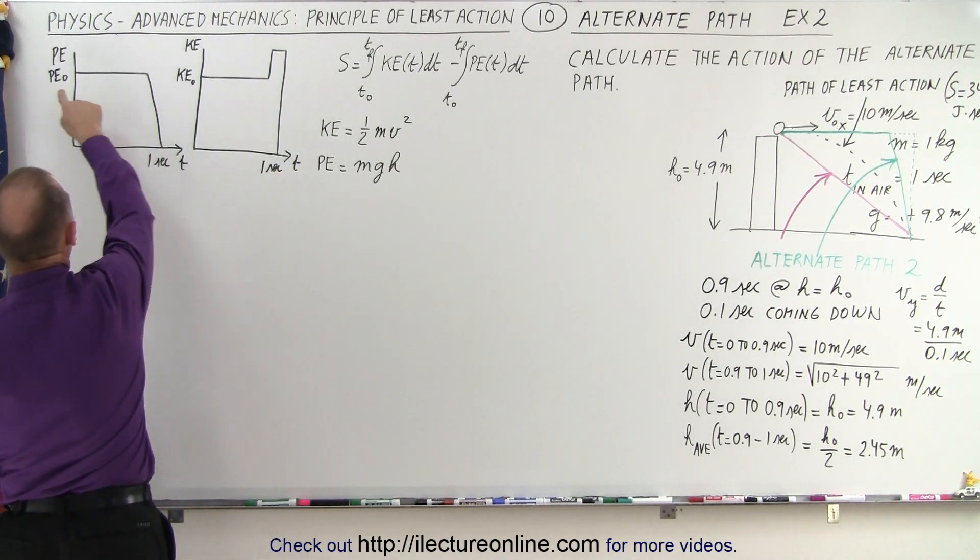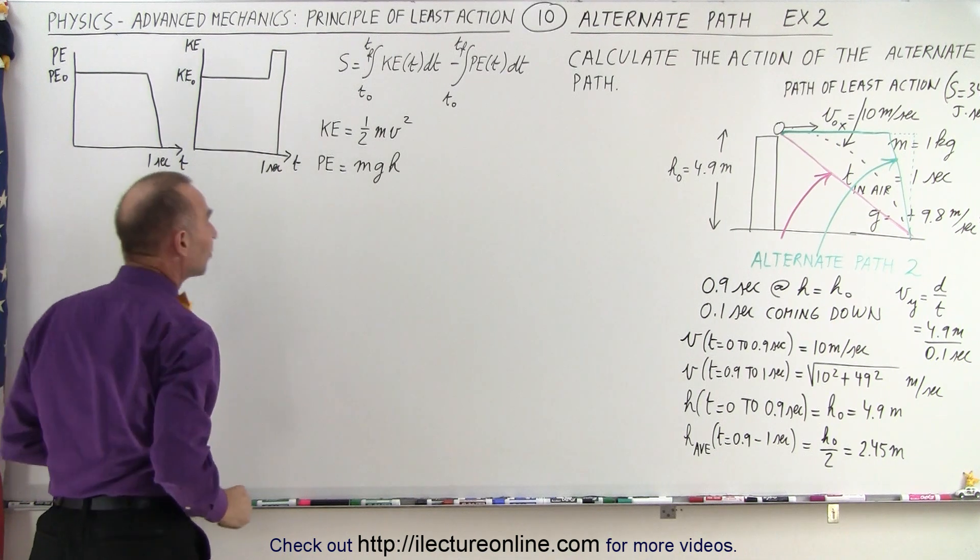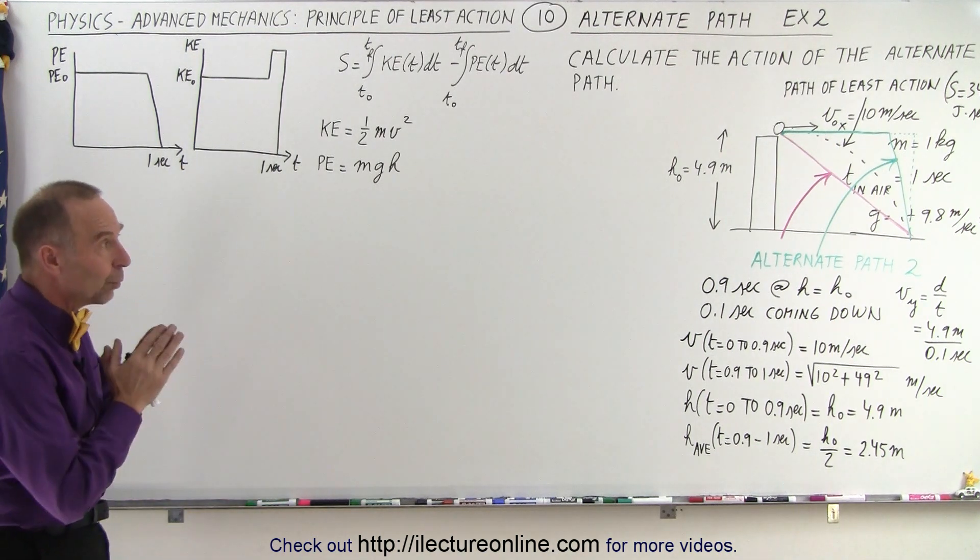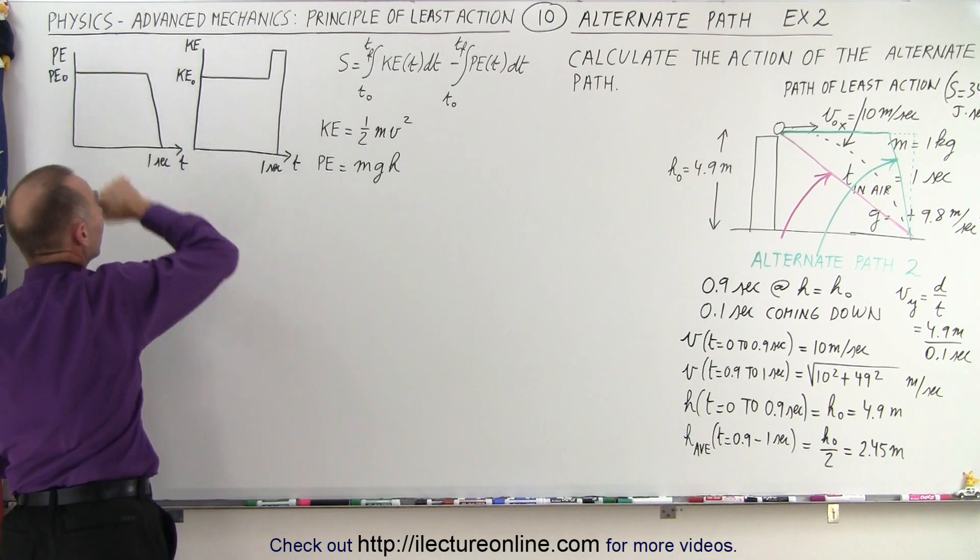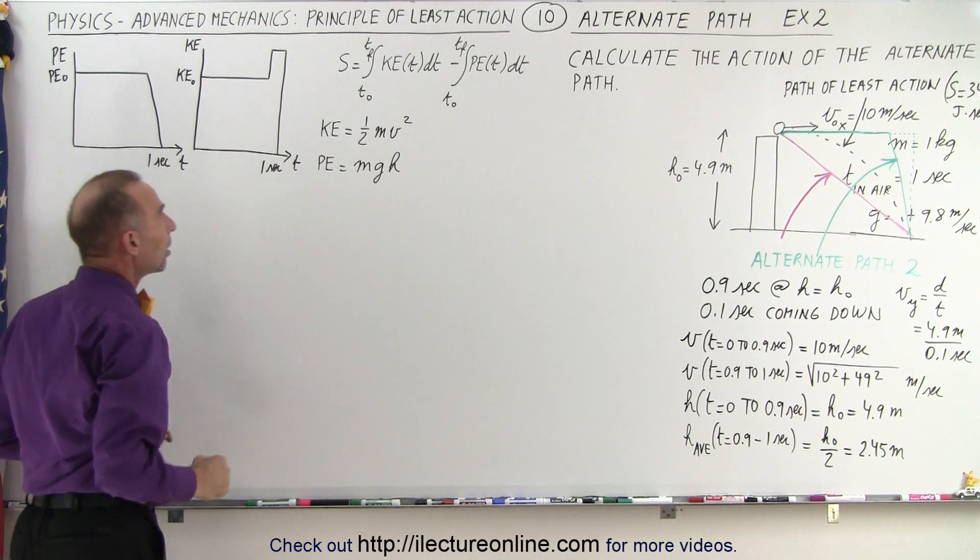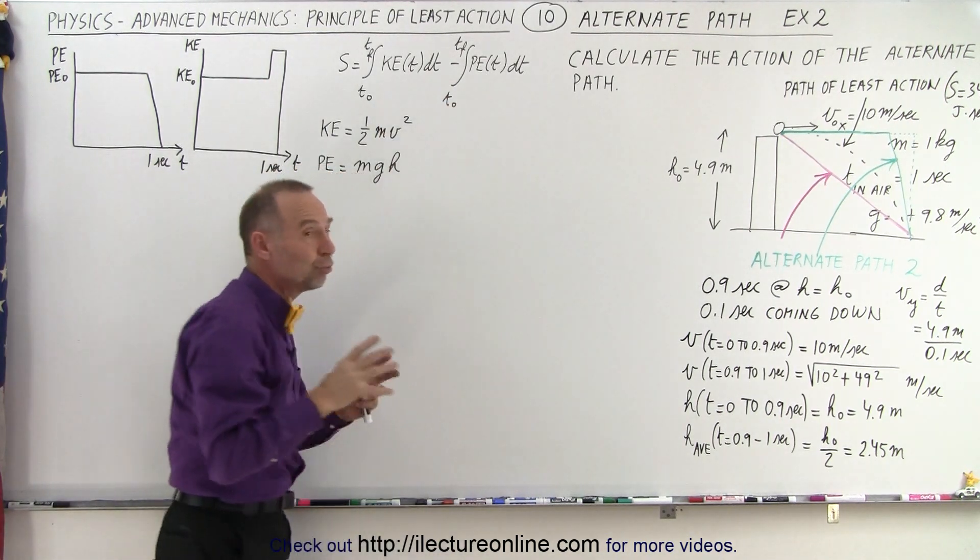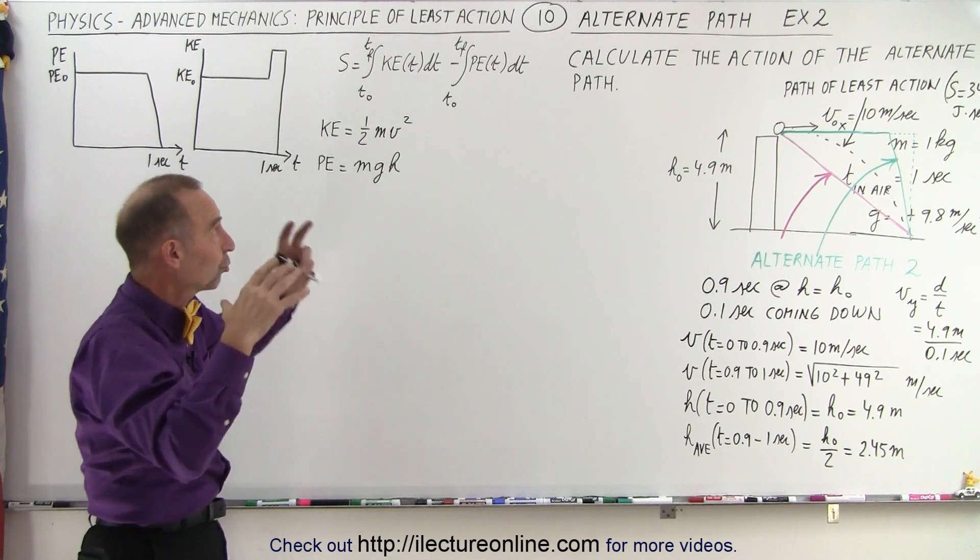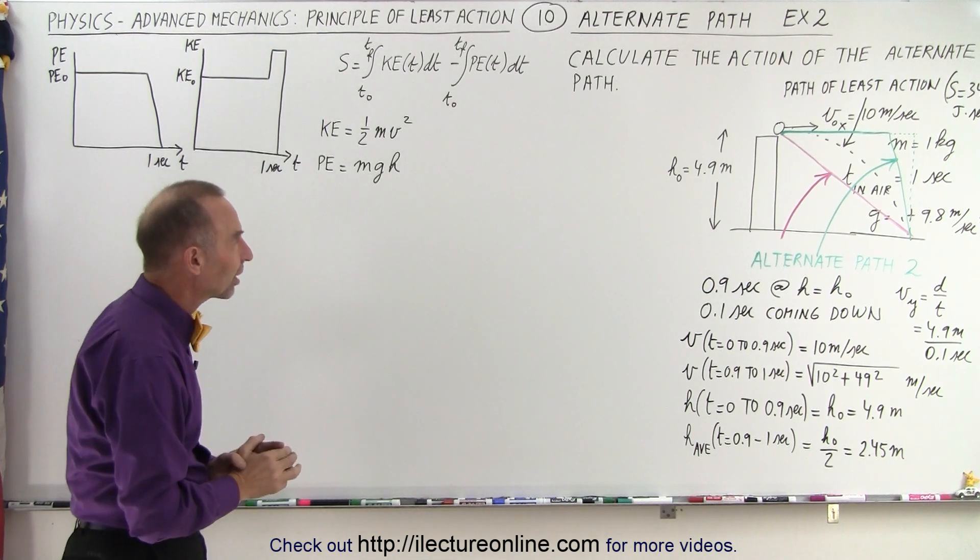Our graphs for potential energy will look like this, and for kinetic energy will look like this. Now, here you might think, well, since we keep the potential energy as high as possible for very long, and we keep the kinetic energy as low as possible for very long, when we subtract the two, we may end up with a smaller number by subtracting a much greater potential energy average over that one second time span.